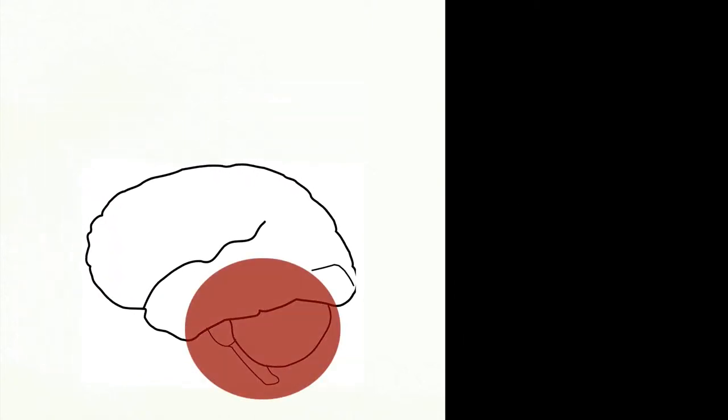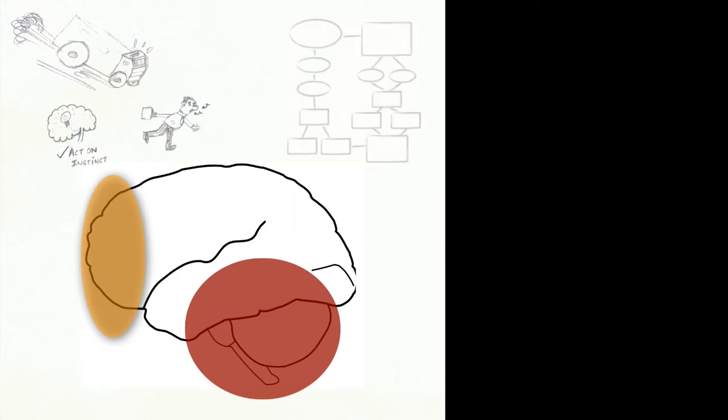The lizard brain decides a course of action based on instincts, while the neocortex takes decisions based on deliberate thinking.